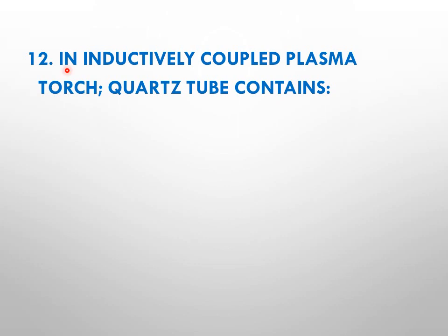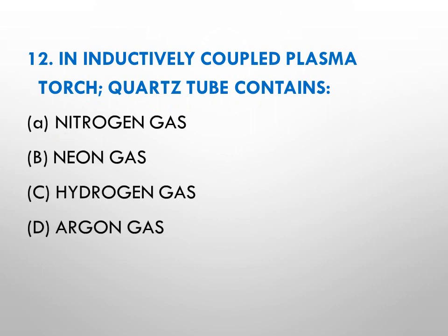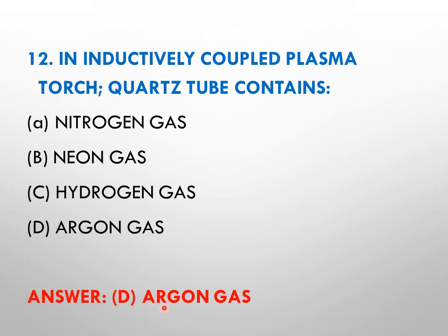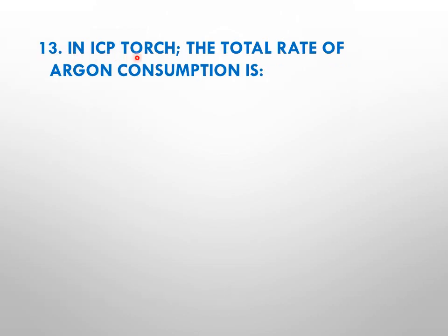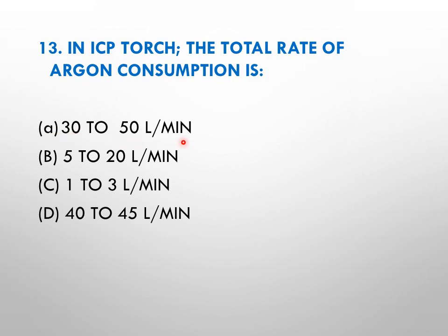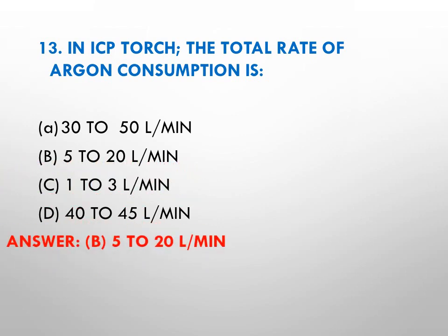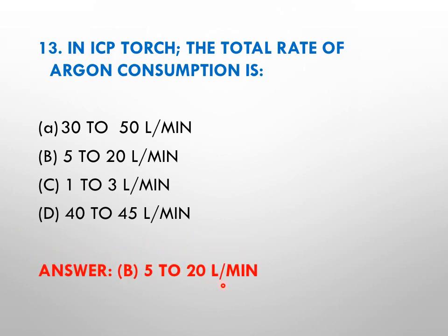Question number twelve: in inductively coupled plasma torch, the quartz tube contains — options: A nitrogen gas, B neon gas, C hydrogen gas, D argon gas. The right answer is D, argon gas flows through the quartz tube of the ICP torch. Question number thirteen: in ICP torch, the total rate of argon consumption is — options: A 30 to 50 liters per minute, B 5 to 20 liters per minute, C 1 to 3 liters per minute, D 40 to 45 liters per minute. The right answer is B, 5 to 20 liters per minute.